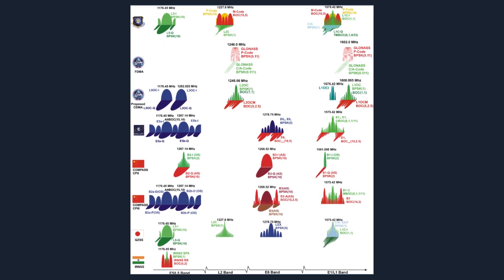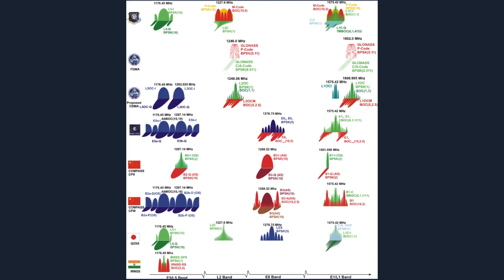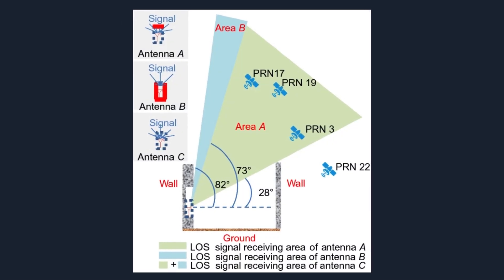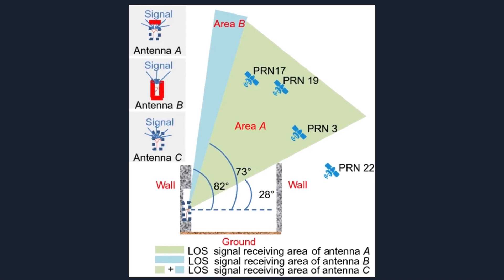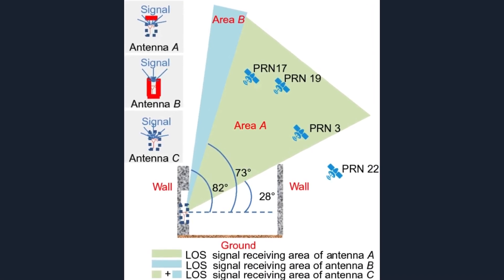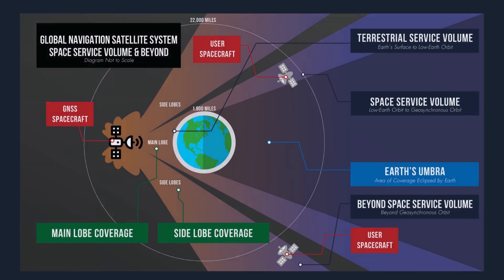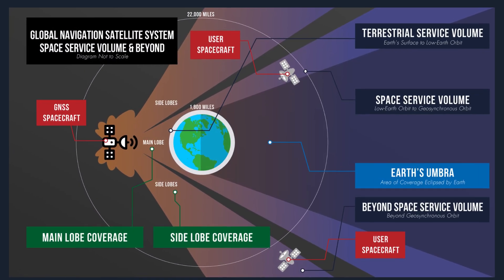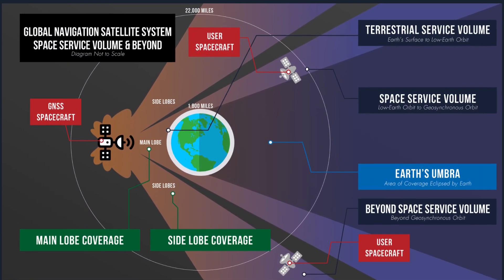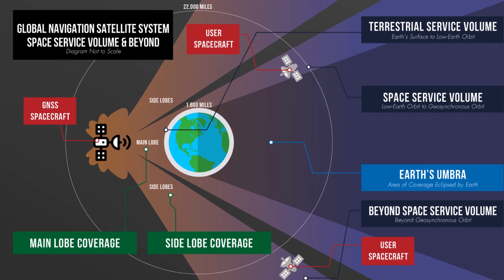However, advances in technology are continually improving GNSS. For example, using signals from multiple GNSS systems together, known as multi-GNSS, can enhance accuracy and reliability. There's also growing interest in integrating GNSS with other technologies, like inertial navigation systems for even better performance.